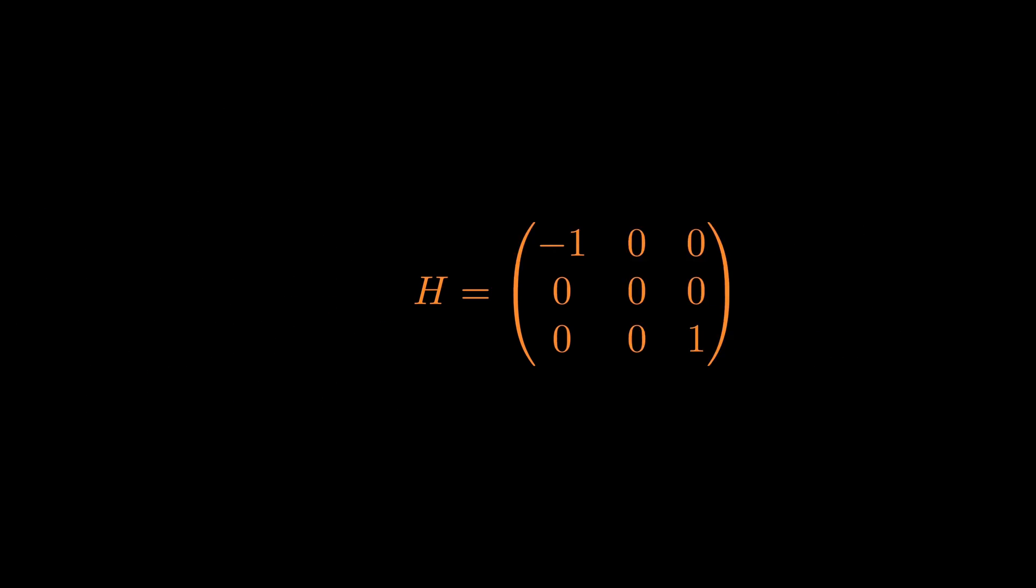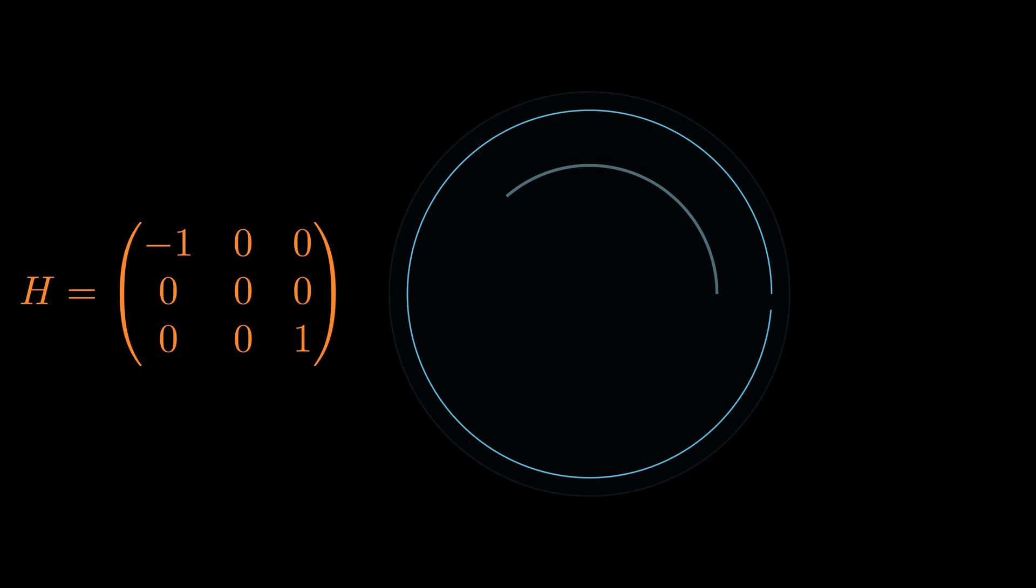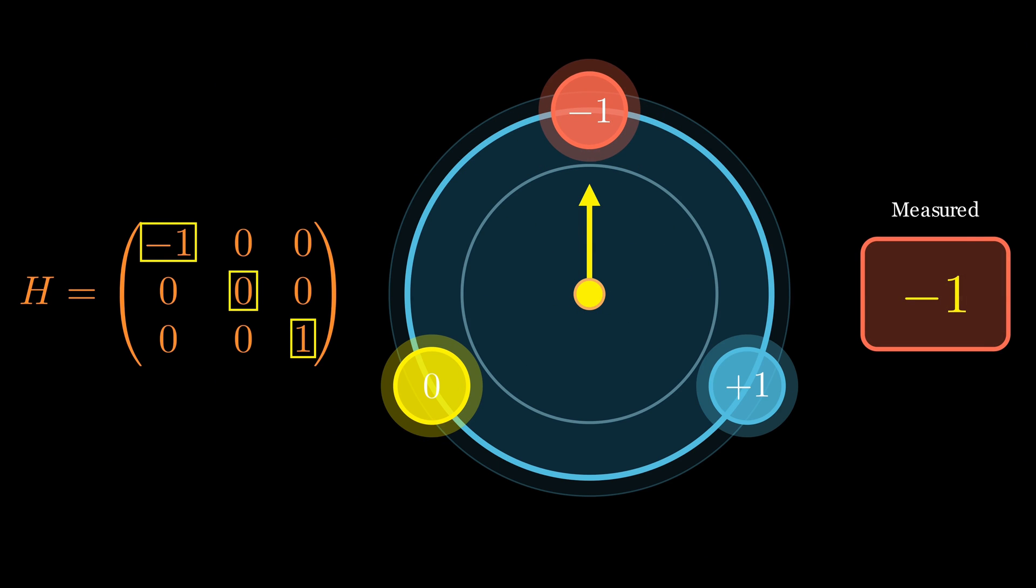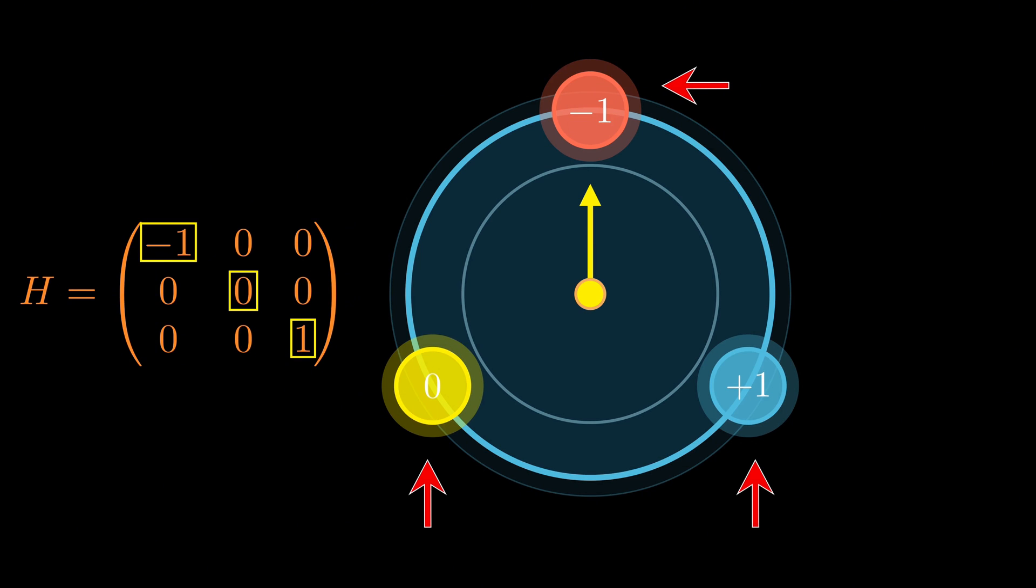Now, according to quantum mechanics, when we measure the energy of this system, we can only obtain one of the values that appear on the diagonal of this matrix. Negative one, zero, or positive one. These are called the eigenenergies of the system. And this discreteness is what gives quantum mechanics its name. Quantum means the energies come in distinct levels, not a continuous range.